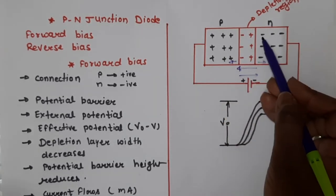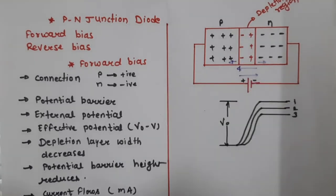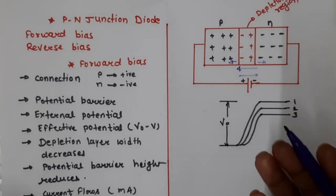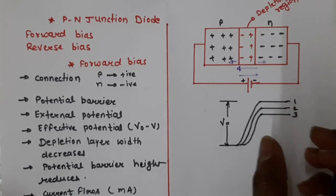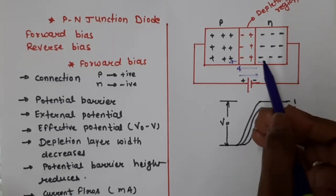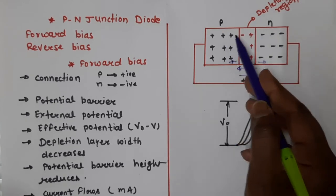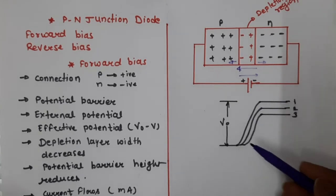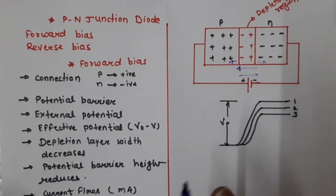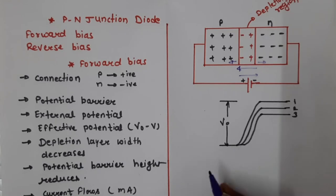Because the potential barrier is reduced, electrons can easily flow from N-type to P-type. This electron flow means current is produced. So in forward biasing, current is produced and it is in the order of milliamperes. The depletion layer becomes very small, which allows electrons to easily move toward the P side. As a result, current is generated and the potential barrier gradually reduces.